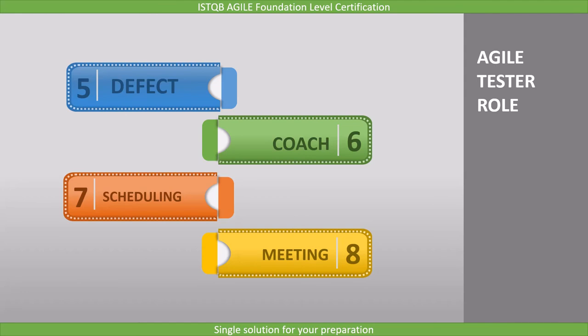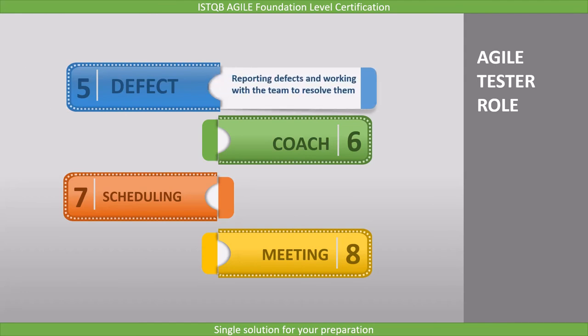The fifth point is related to defects — reporting defects and working with the team to resolve them. The role of the tester is to find defects, and when a defect is found, it shall be reported effectively. In an Agile project, the tester's role is not only to find the defect but also to help the team remember to fix it.